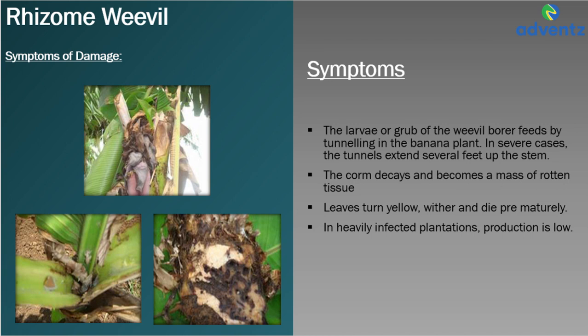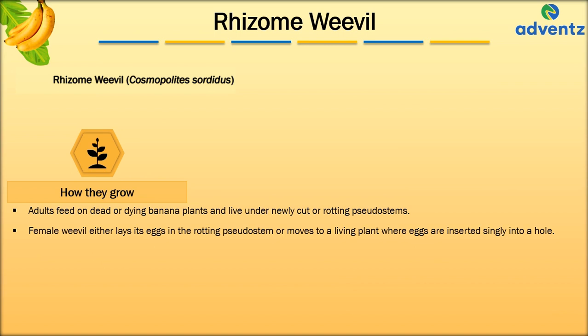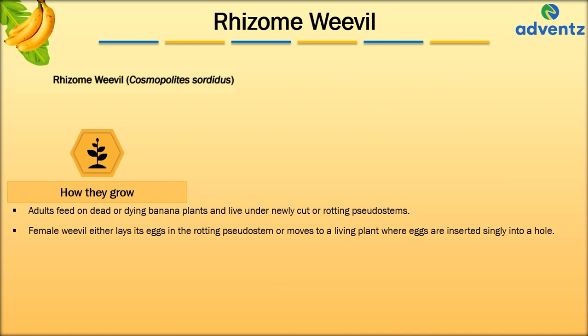The larvae or grub of the weevil borer feeds by tunneling in the banana plant. In severe cases, the tunnel extends several feet up the stem. The corm decays and becomes a mass of rotten tissue. Leaves turn yellow and wither and die prematurely. Injury to the corm prevents nourishment going to the plant; in heavily infected plantations, production is low. The adults feed on dead or dying banana plants and live under newly cut or rotting pseudostems. The female weevil either lays eggs in the rotting pseudostem or moves to a living plant where eggs are inserted singly into a hole. The borers spread from plantation to plantation through planting material.